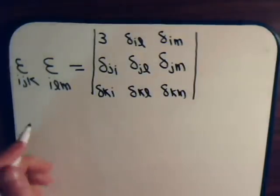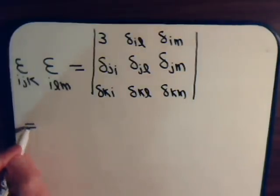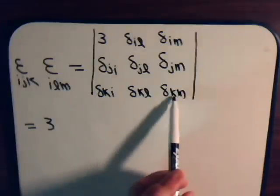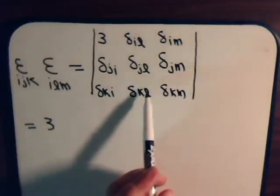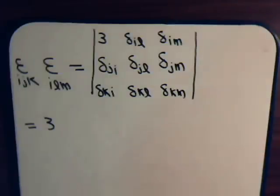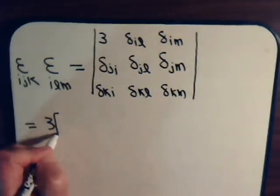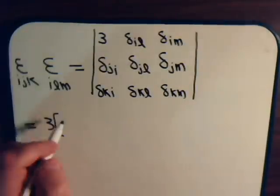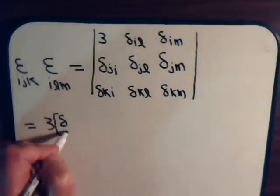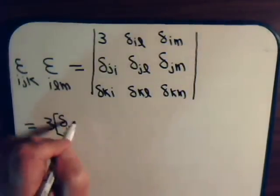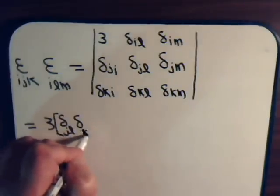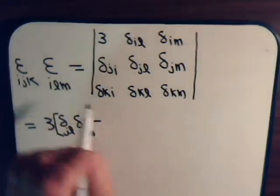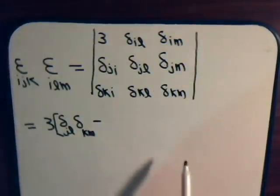This will be equal to: we'll have 3, and then we'll have this times this minus this times this. So that will be 3 times (delta_JL * delta_KM minus delta_KL * delta_JM).